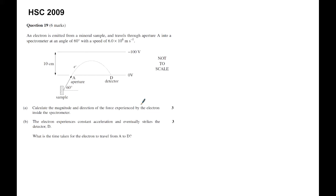An electron is emitted from a mineral sample and travels through aperture A into a spectrometer at an angle of 60 degrees with a speed of 6 by 10 to the power of 6 meters per second.